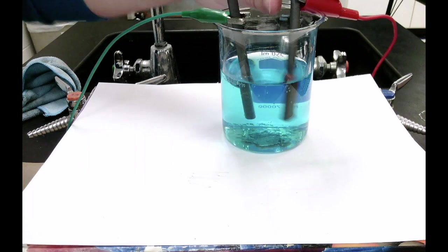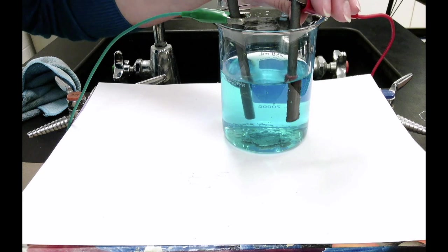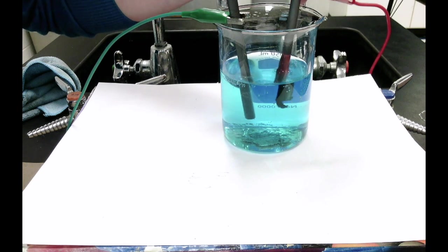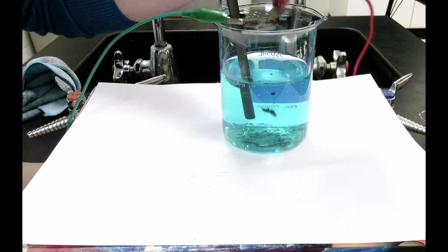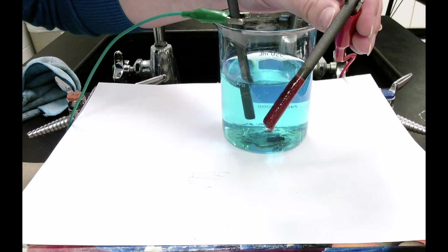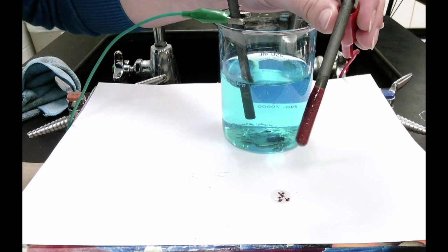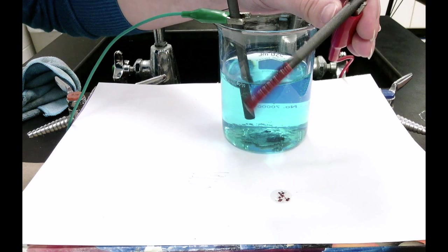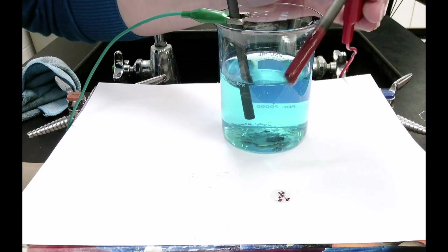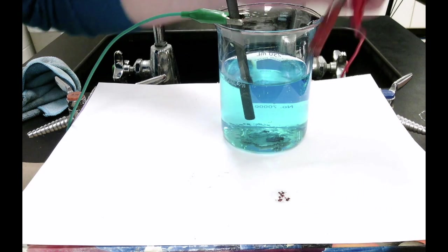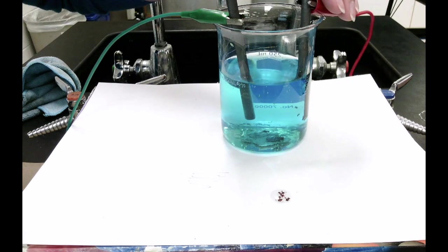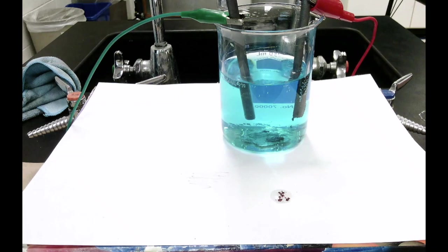Now if we pull the negative electrode out of the solution we can clearly see that it's covered in this reddish solid. You can even see a little bit drip onto the paper. Now since the solution contained copper chloride it's reasonable to assume that this reddish solid is in fact solid copper metal that's being formed.